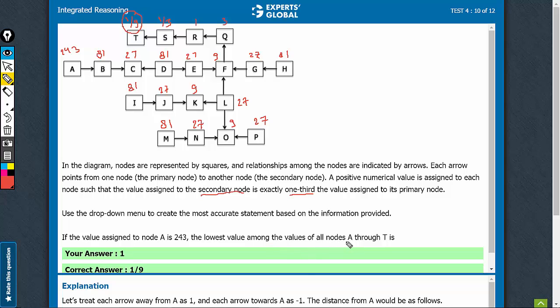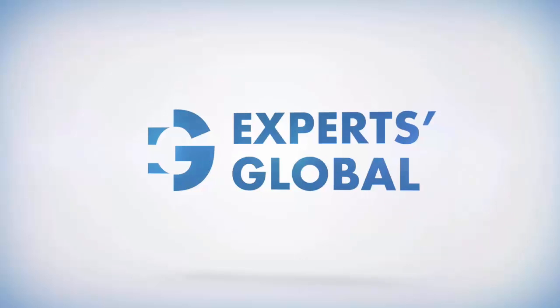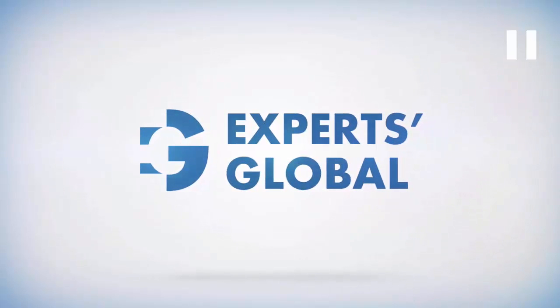The lowest value among the values a through t is 1 by 9. So, 1 by 9 is the correct answer. That's the correct answer, 1 by 9.